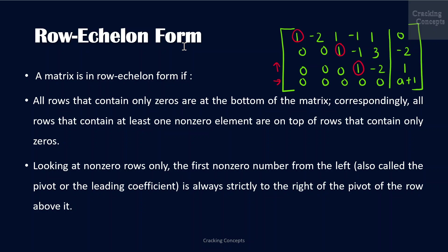A matrix is said to be in row echelon form if all the rows that contain only zeros are at the bottom of the matrix. Correspondingly, all rows that contain at least one non-zero element are on top of the rows that contain only zeros. Looking at the non-zero rows, the first non-zero number from the left — also called the pivot or leading coefficient — is always strictly to the right of the pivot of the row above it.